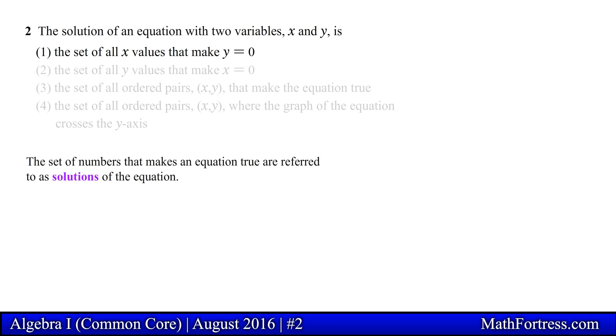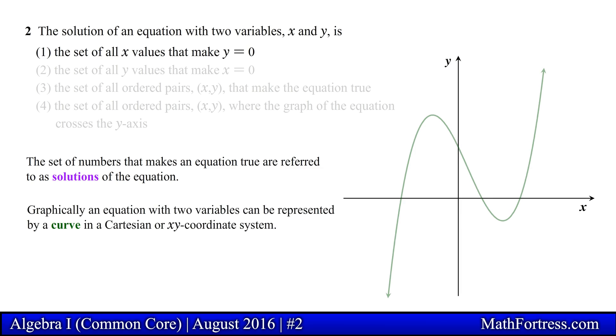The set of numbers that makes an equation true are referred to as solutions of the equation. Graphically an equation with two variables can be represented by a curve in a Cartesian or xy coordinate system. Any point with coordinates (x,y) that is located on the curve is said to be a solution to the equation.